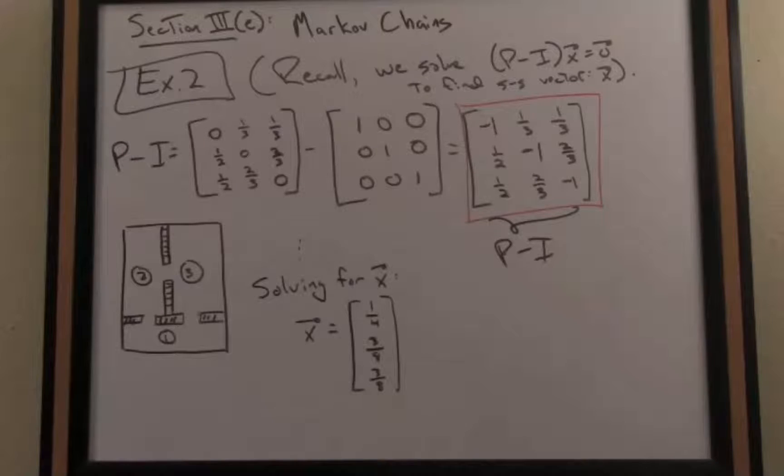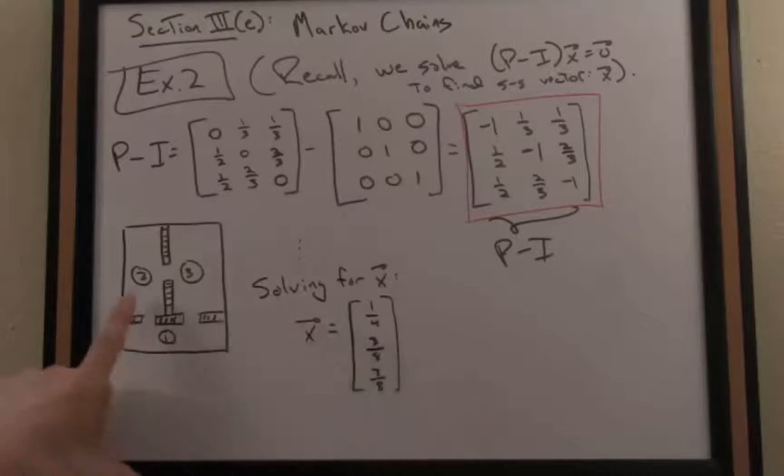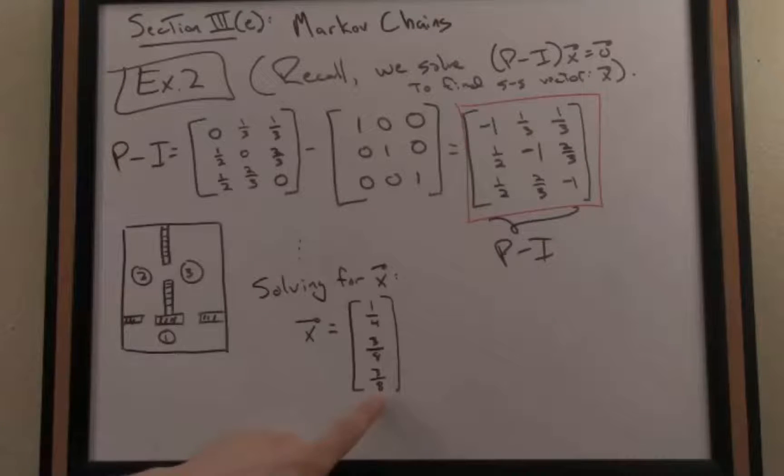What does all this mean in the context of this particular application of the mouse and the maze problem? If I were to place the mouse initially in any of the rooms in the maze, with respect to any initial state vector I like, and I let the mouse run around in the maze as long as it wants, I can answer what is the end behavior of the mouse? In the long run, the mouse spends a quarter of its time in room one, three-eighths of its time in room two, and similarly three-eighths of its time in room three.